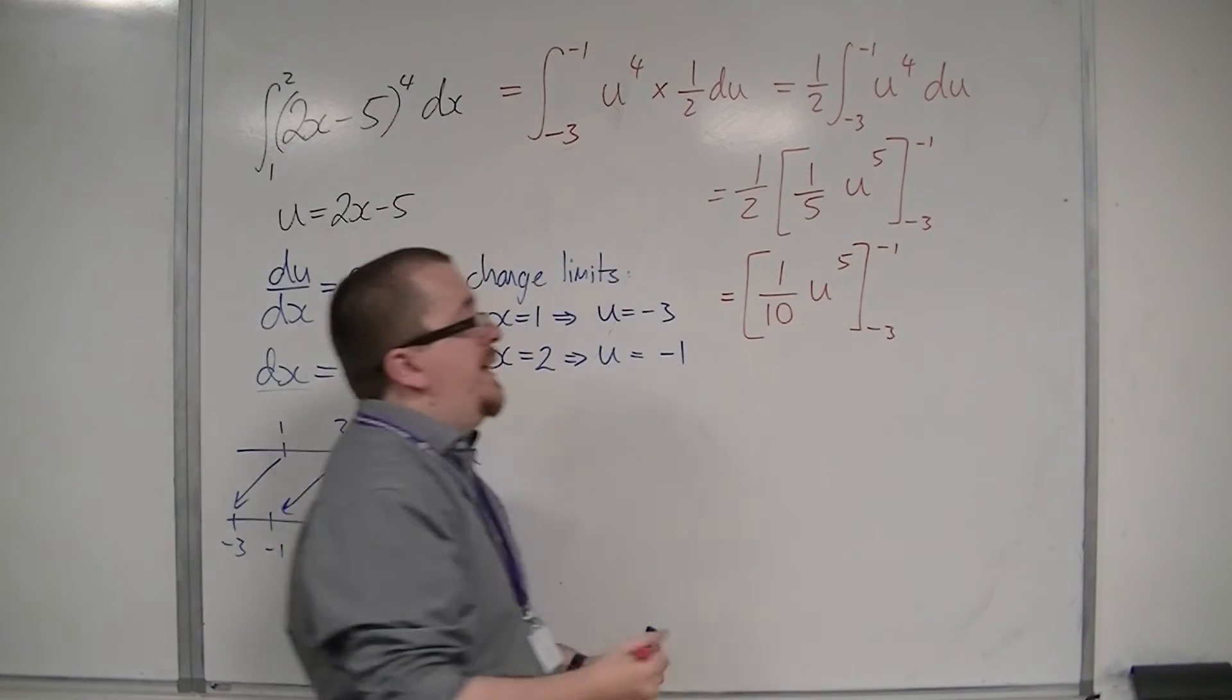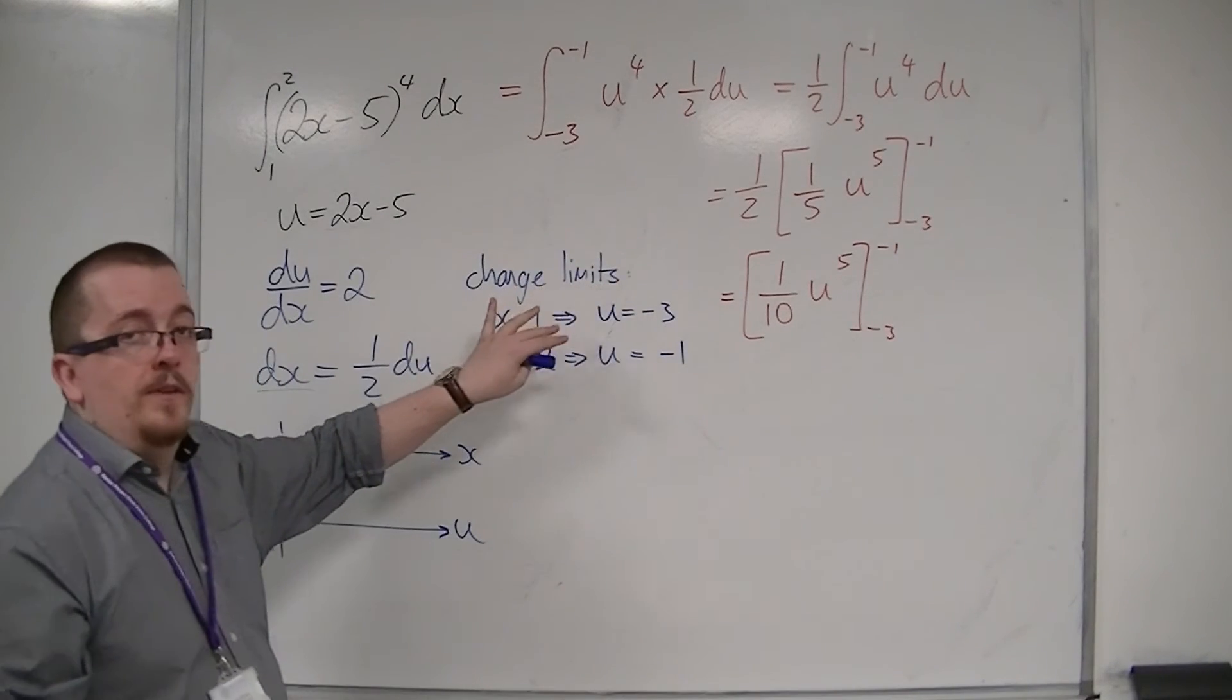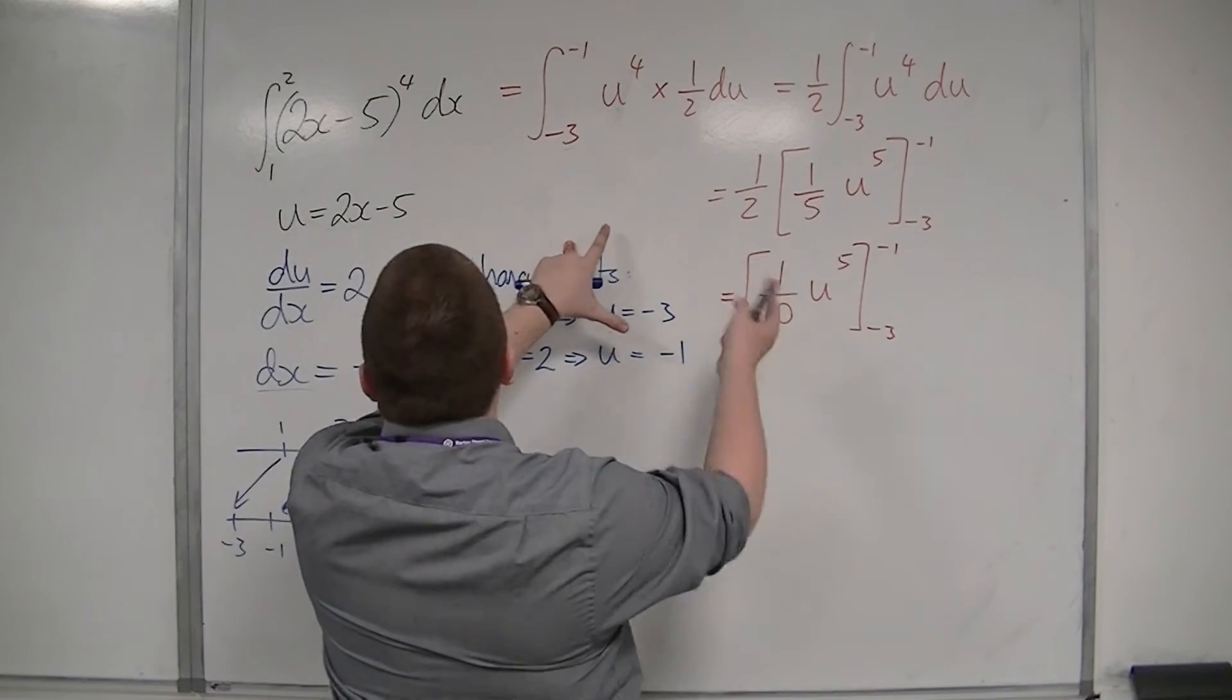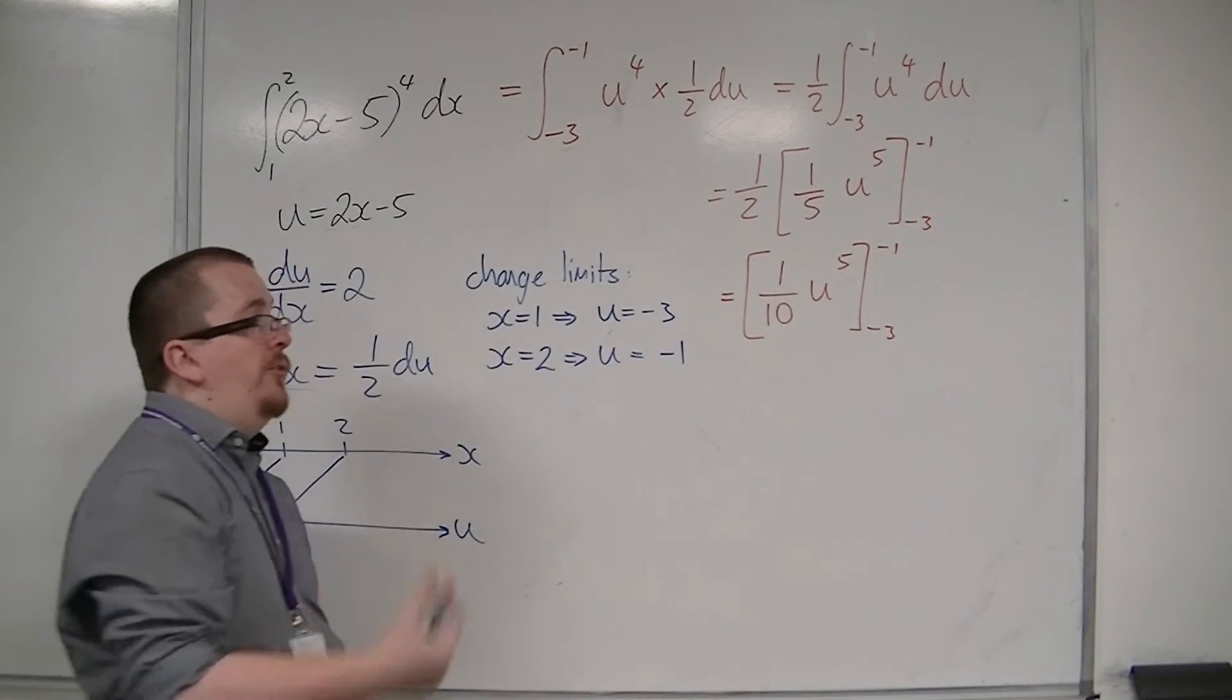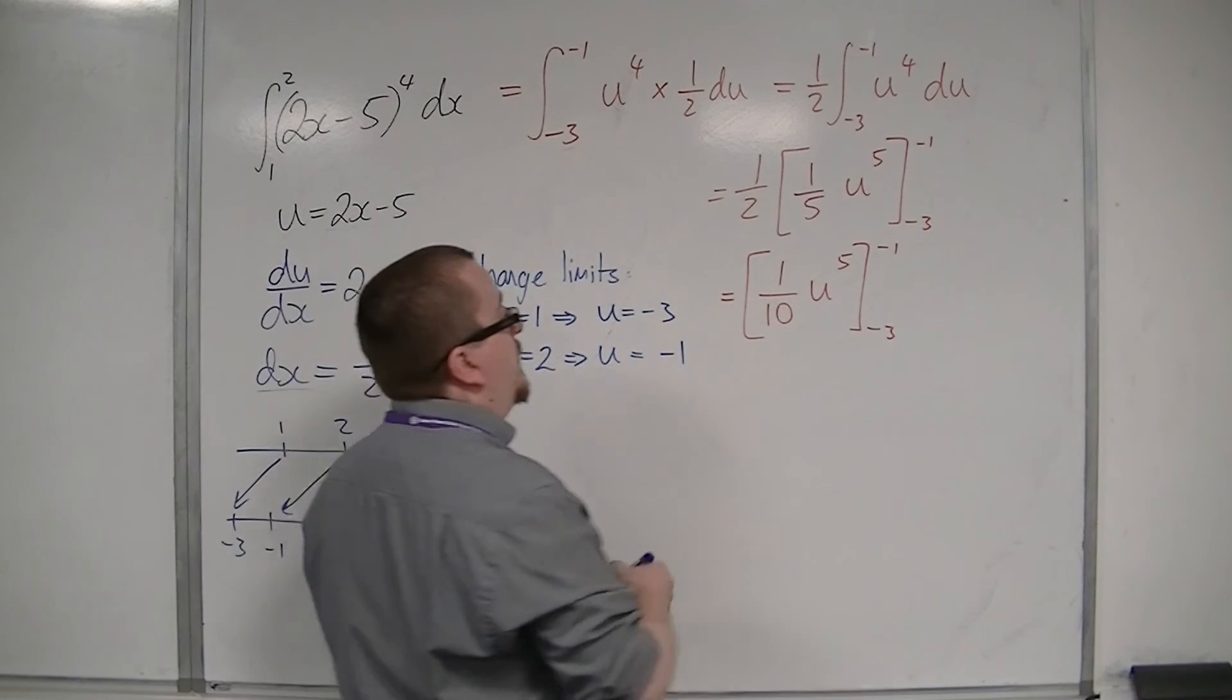Now, it's at this stage, where, depending on whether you've changed the limits or not, if you haven't changed the limits, then you can substitute u back in. But, because we've changed the limits, I can just substitute minus 1 and minus 3 in now, and that will be my final answer.